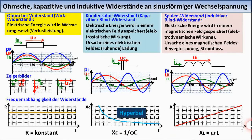The AC power with an ohmic resistor is always positive, since voltage and current always have the same polarity, and the power results as the product of voltage and current.